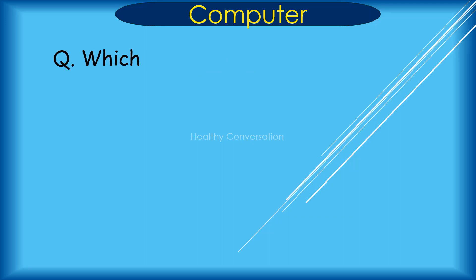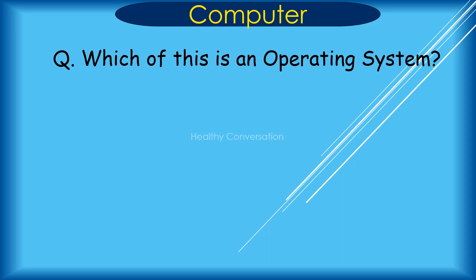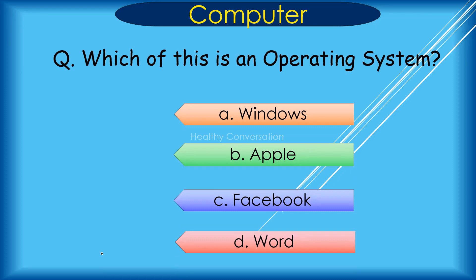Question: Which of these is an operating system? A. Windows, B. Apple, C. Facebook, D. Word. Correct answer is A. Windows.